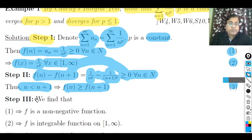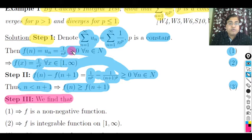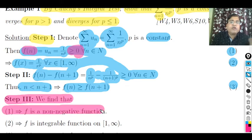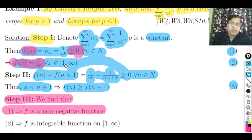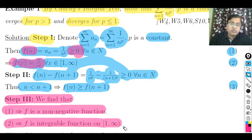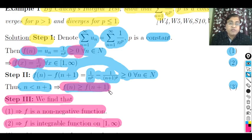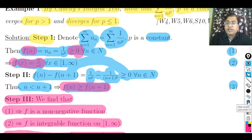Step 3 — We find that: relation (1) implies f(n) ≥ 0, so f(x) is a non-negative function. Relation (2): f(x) = 1/x^p for x ∈ [1, ∞) is meaningful everywhere and can be integrated, so the function is integrable on the semi-closed interval [1, ∞). Relation (3): f(n) ≥ f(n+1) implies the function is monotonic decreasing. All three conditions of Cauchy's Integral Test are satisfied, so we can apply Cauchy's Integral Test.